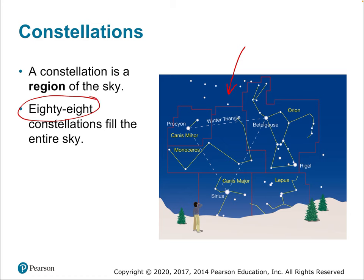The 88 official constellations cover both the northern part of the celestial sphere, well-known in North America, and the stars only visible from Earth's southern hemisphere — those in the southern celestial sphere.